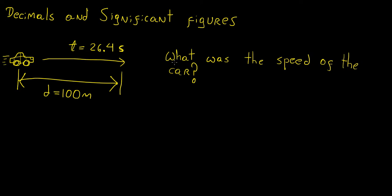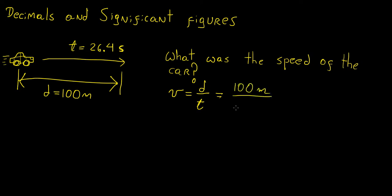So the question is: how can we determine the speed of the car based on this information? From basic physics we know that speed is distance divided by time, because speed is expressed in units of meters per second — meters at the top and seconds at the bottom. So we put these together: that's going to be 100 meters divided by 26.4 seconds.